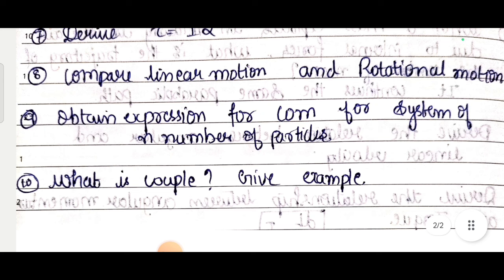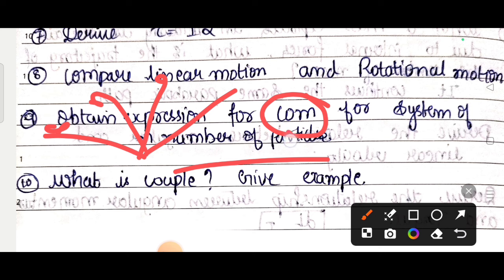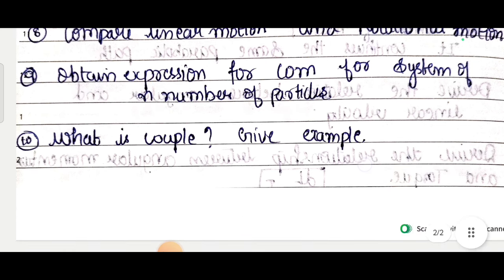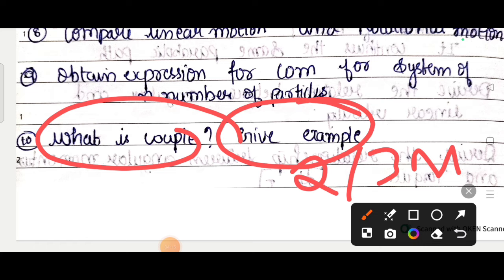Ninth question: obtain expression for center of mass for a system of n number of particles. The derivation is important for 5 marks. And tenth: what is couple? Give example. This is also important for 2 or 3 marks.